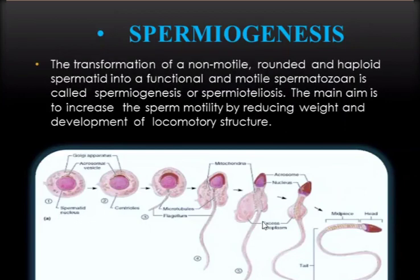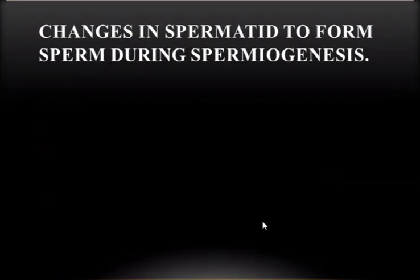The transformation of a non-motile, rounded, haploid spermatid into a functional and motile spermatozoon is called spermiogenesis or spermioteleiosis. The main aim is to increase sperm motility by reducing weight and developing locomotive structures. Now we will discuss the changes in the spermatid to form a sperm during spermiogenesis.